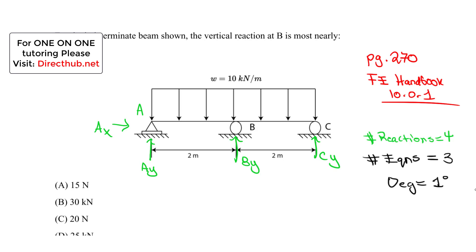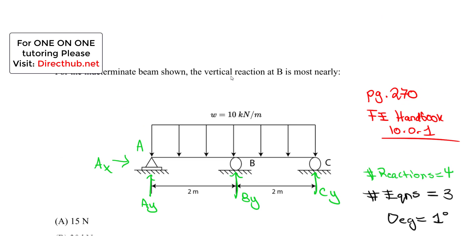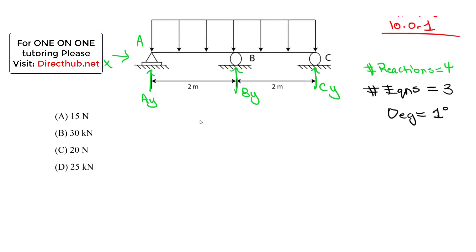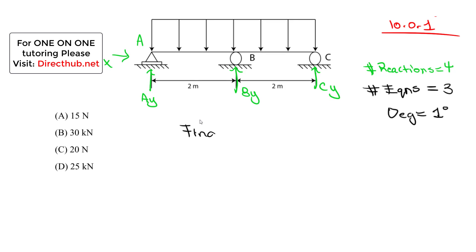We know we cannot strictly use statics. We have to use some method, and this method is going to be the force method. I just like to cover everything that we are expected to know. So in case we see this, let's just go over this method. What are we looking for? We want the vertical reaction at B. So let's write that as a given. We want to find at B, the vertical reaction BY.